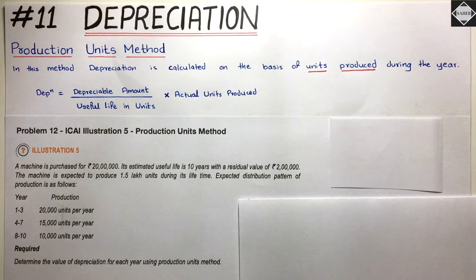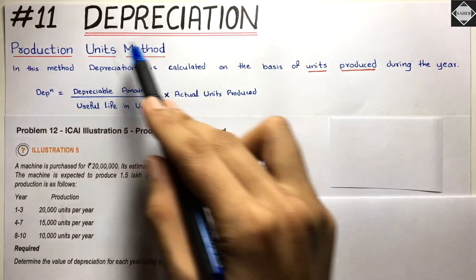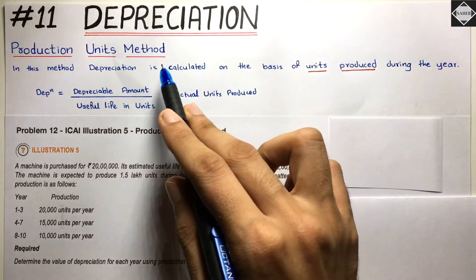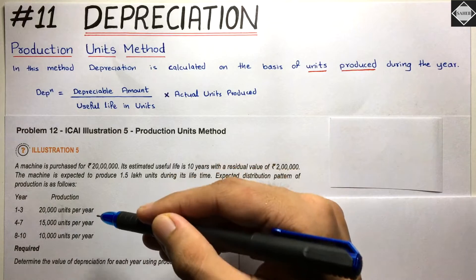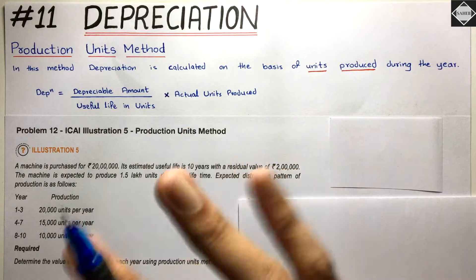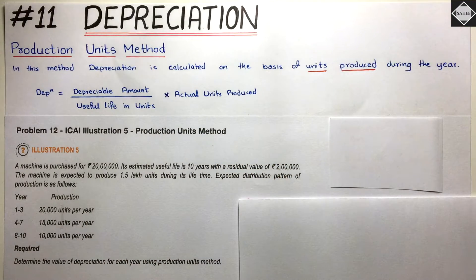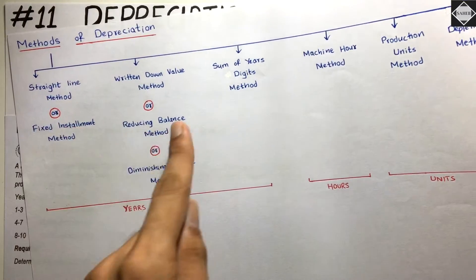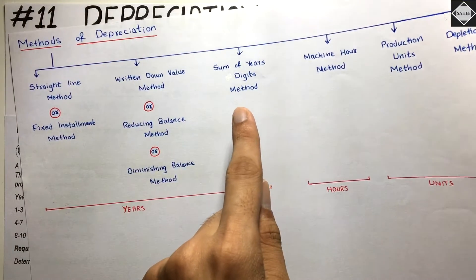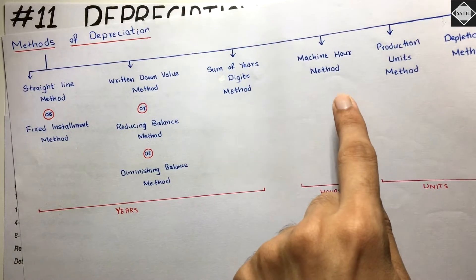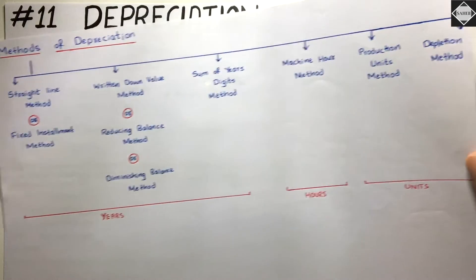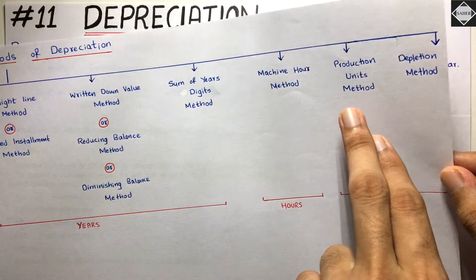Hi everyone, welcome back to Sahab Academy. Today in this 11th video of the Depreciation chapter, we are going to understand the Production Units Method and solve a problem on it. So far we have covered the SLM method, WDV method, Sum of Years Digits method, and in the previous video we saw the Machine Hour method.